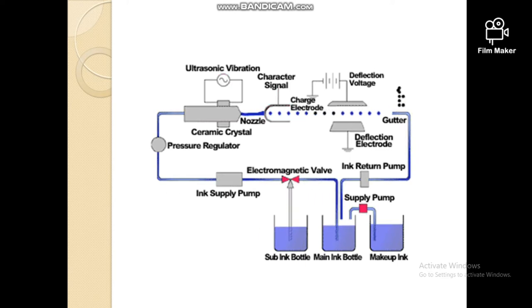During their flight, these droplets pass through two electrical components. One is the charging electrode and the second is deflecting blades, which form a parallel plate capacitor.